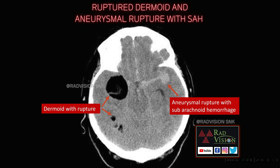Here you can see a dermoid with fat-containing droplets dispersed in the cerebral parenchyma. This is a dermoid with rupture. Incidentally, you can also see an aneurysm with adjacent subarachnoid hemorrhage, probably representing aneurysmal rupture with SAH. So both dermoid rupture and aneurysmal rupture with SAH are seen in a single case.